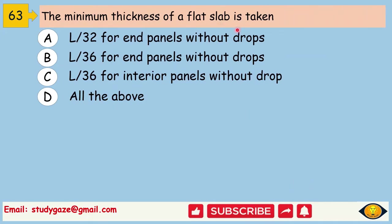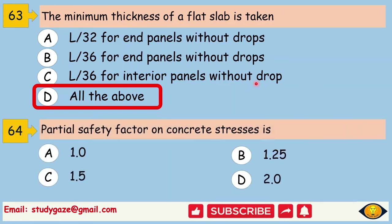The minimum thickness of a flat slab is taken. All of these L by 32 for end panels without drops, L by 36 for end panels with drops, L by 36 for interior panels without drop. Partial safety factor on concrete stresses is 1.5.